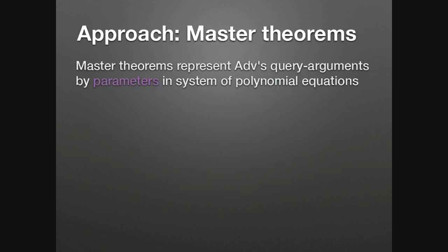The adversary's strategy can be seen as the election of some parameters. If these parameters satisfy a system of polynomial equations, then the scheme is insecure — there exists an attack. On the other hand, if no election of parameters can satisfy all the equations, the system is secure.